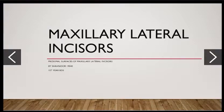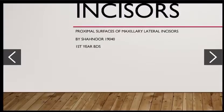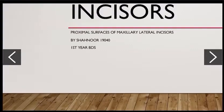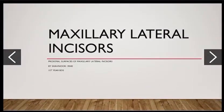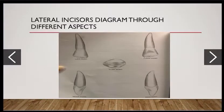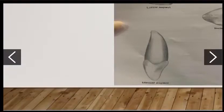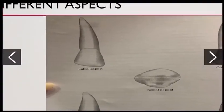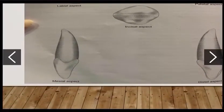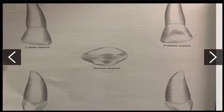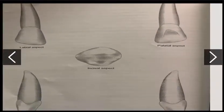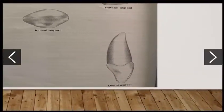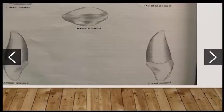The topic is maxillary lateral incisors, specifically the proximal surfaces of maxillary lateral incisors. The diagram shows different aspects of the lateral incisors: the labial aspect, the mesial aspect, the incisal aspect in the center, and the distal aspect at the bottom right.